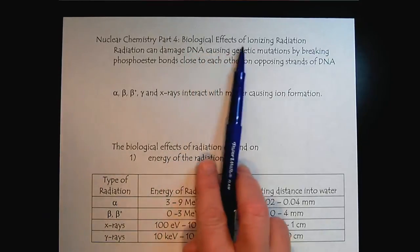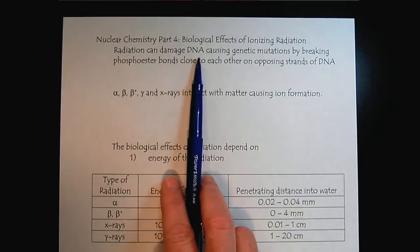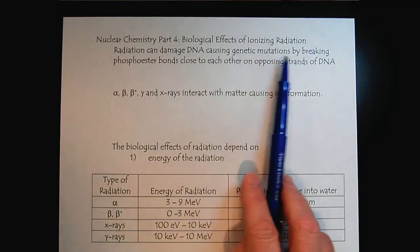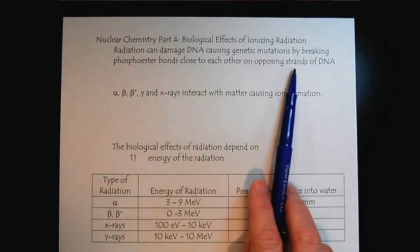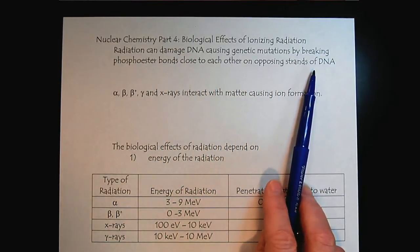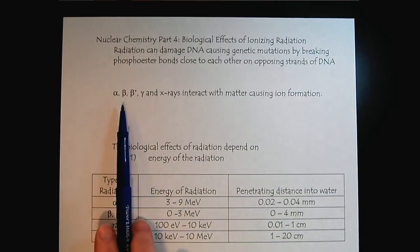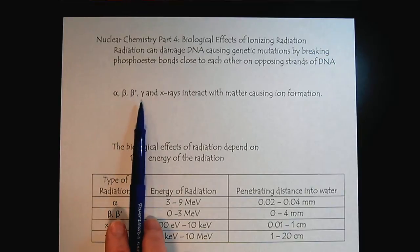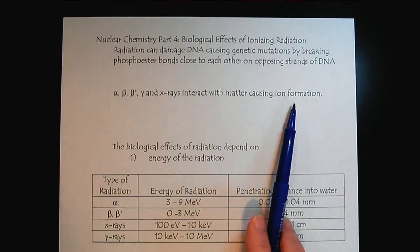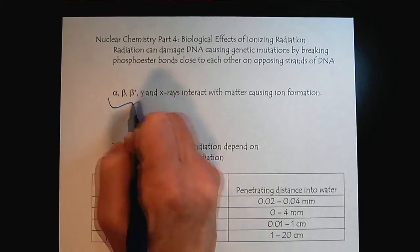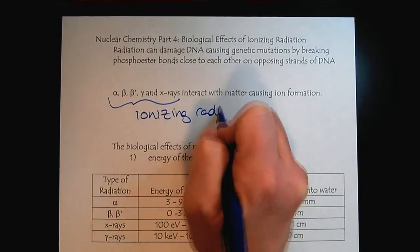The biological effects of ionizing radiation can lead to damage of our DNA, causing genetic mutations by breaking the phosphoester bonds close to each other on opposing strands of DNA. Alpha, beta, positron, gamma, and x-rays interact with matter causing ion formation. That's why they're described as ionizing radiation.